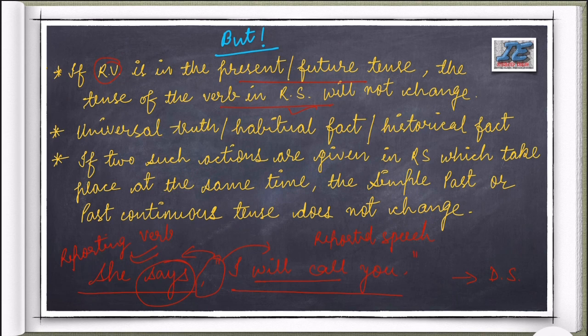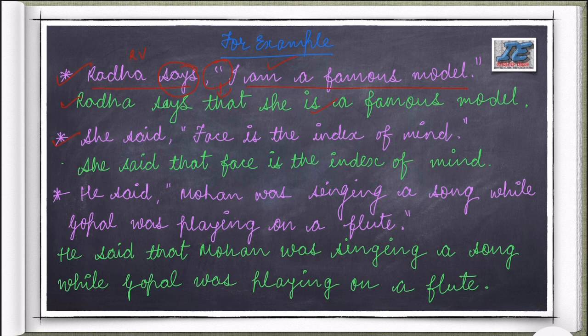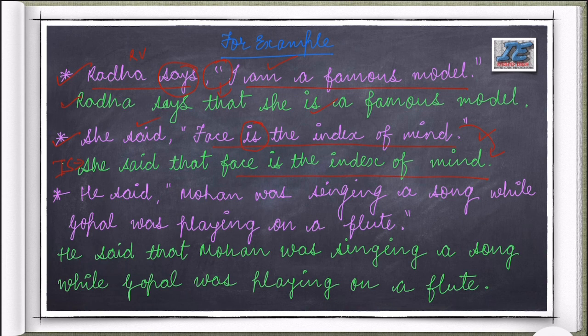Exception number two: universal truths, habitual facts, and historical facts do not change their tenses. For example, 'She said, face is the index of mind.' Even though the reporting verb is past tense, the reported speech stays as 'She said that face is the index of mind,' because it is a universally accepted fact.